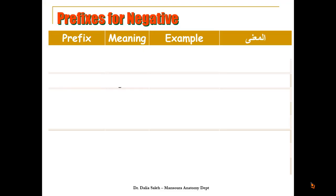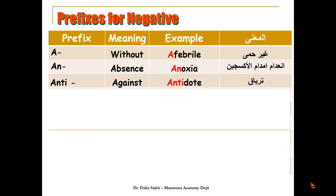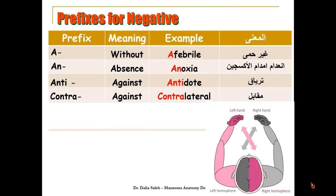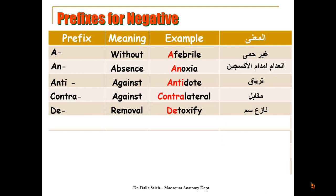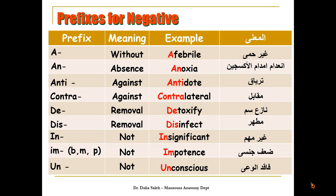Prefixes used for describing something negative: 'A' means without, as in 'afebrile'. 'An' means absence, as in 'anoxia'. 'Anti' means against, as in 'antidote'. 'Contra' means against, as in 'contralateral'. 'De' means removal, as in 'detoxify'. 'Dis' also means removal, as in 'disinfect'. 'In' means not, as in 'insignificant'; it becomes 'Im' when followed by P, B, or M, as in 'impotence'. 'Un' also means not, as in 'unconscious'.